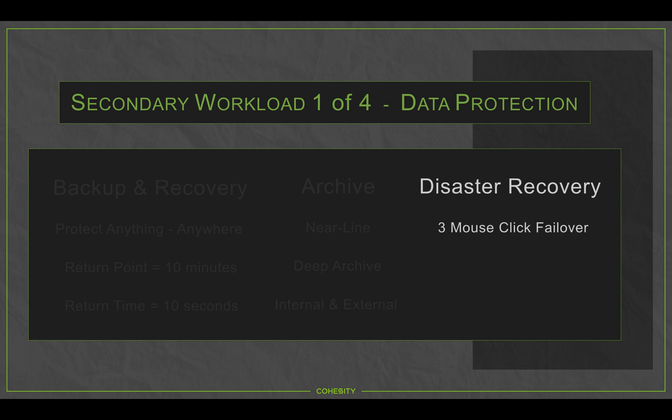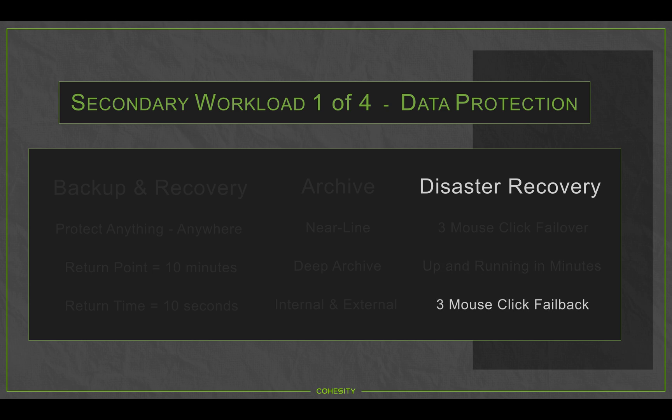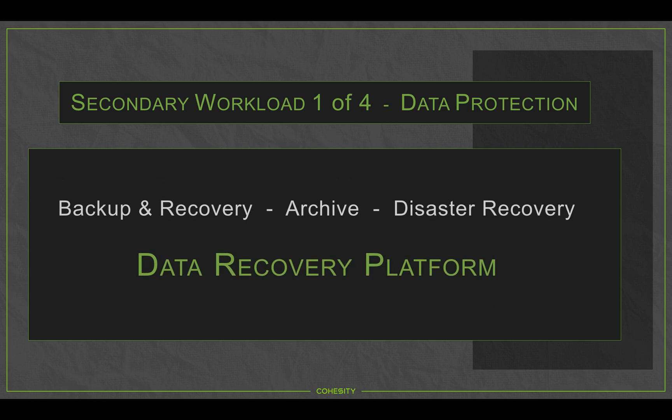And lastly, disaster recovery: three-mouse-click failover to a secondary data center, being up and operating in minutes, and a three-mouse-click failback. What's key about Cohesity data protection is our ability to handle backup recovery, archive, and disaster recovery from a single data environment — a complete data recovery platform. No moving parts, no agents — running seamlessly whether in a remote office, data center, or the cloud.